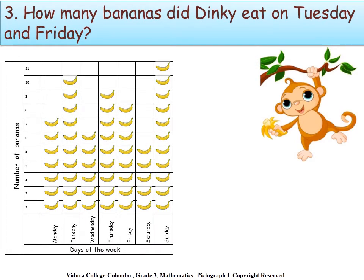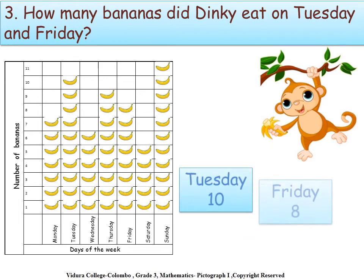Question number three: how many bananas did Dinky eat on Tuesday and Friday? He ate ten bananas on Tuesday and eight bananas on Friday. Let's add these numbers together. Eight and ten — the answer is eighteen.